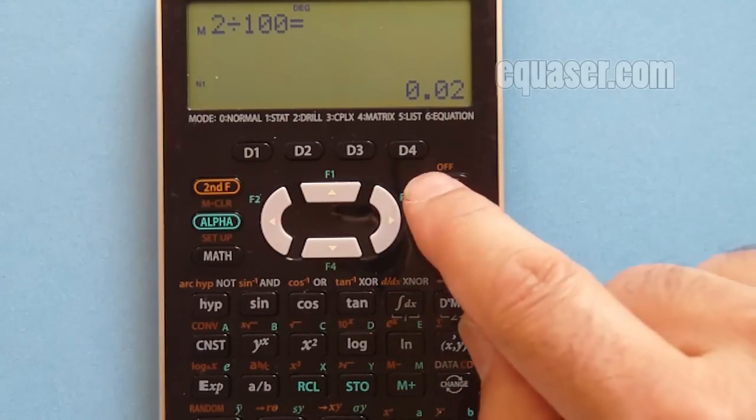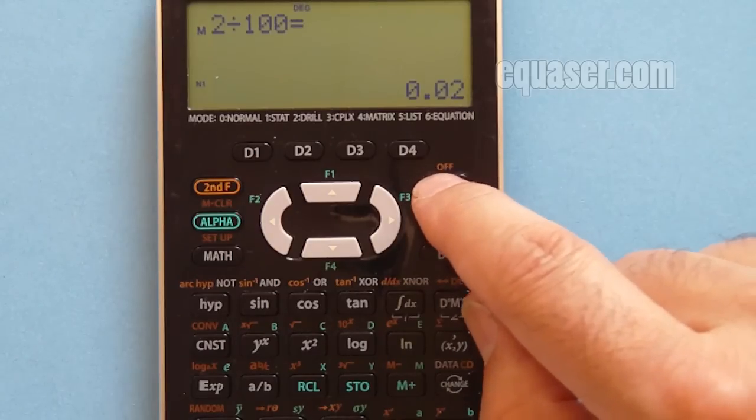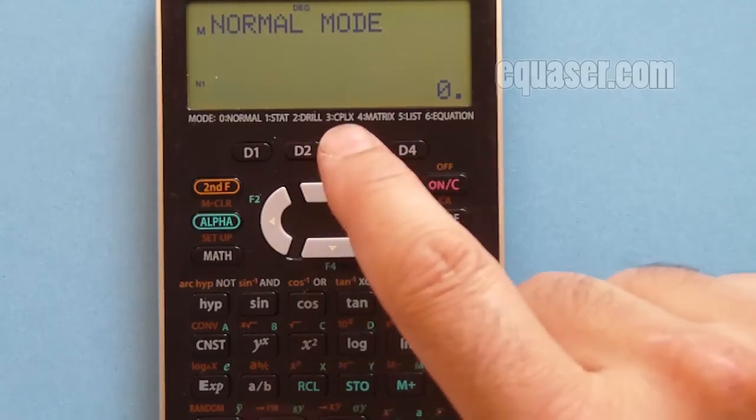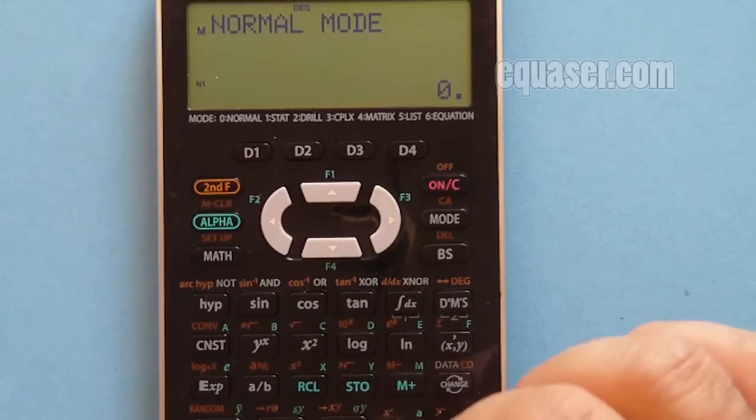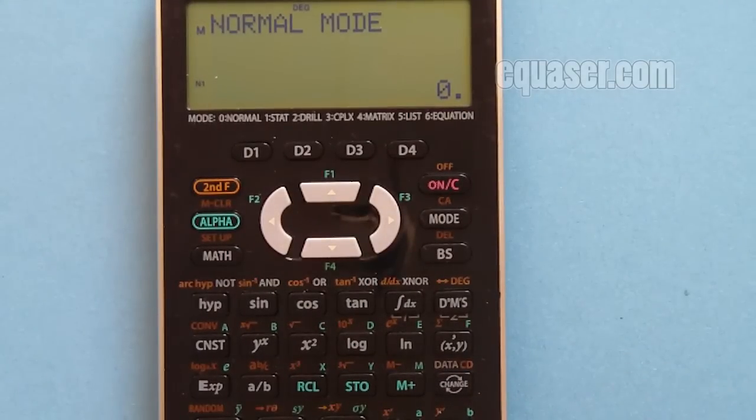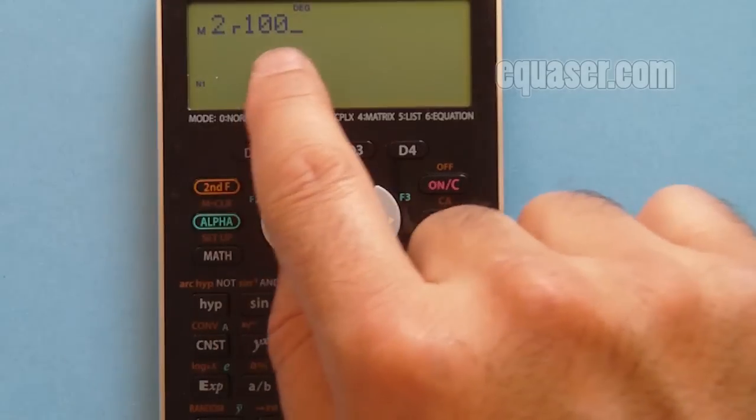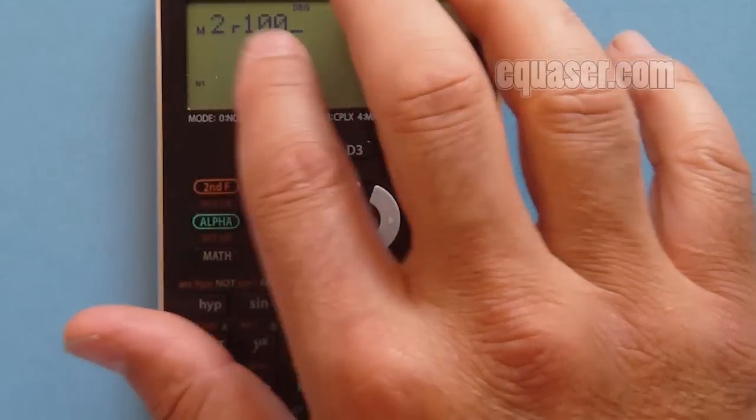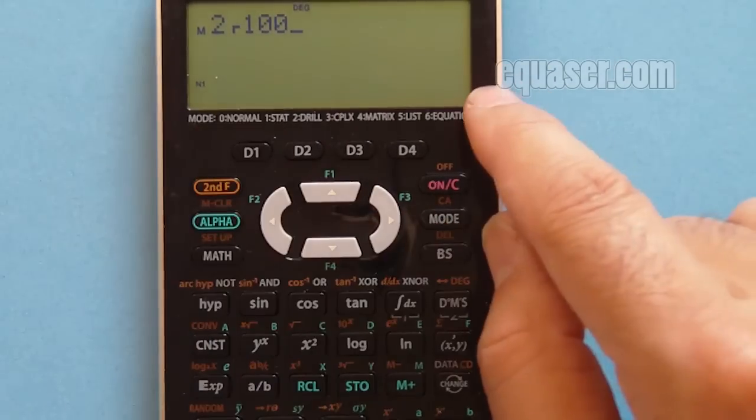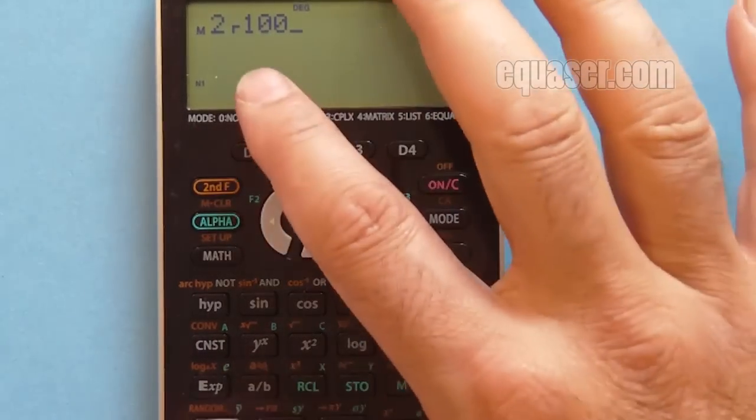But there is a trade-off. Now you cannot use the fraction as it appeared on the paper. For example, if I want to put 2 divided by 100, 2 over 100, this is not what it was looking in WriteView mode. This is a trade-off, so you have to see it this way in order to get 2 divided by 100.